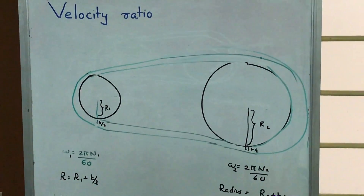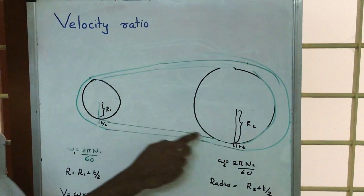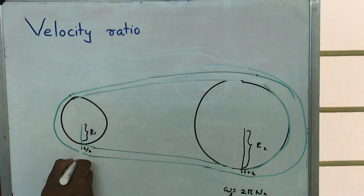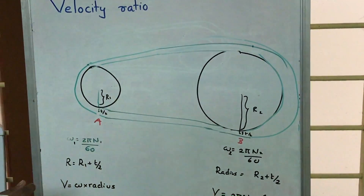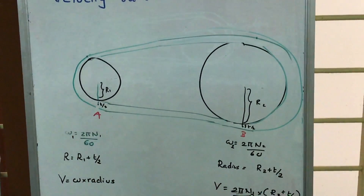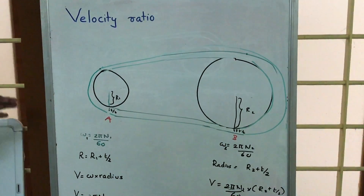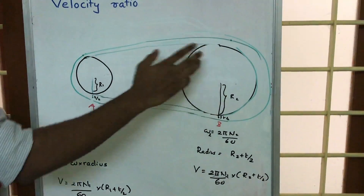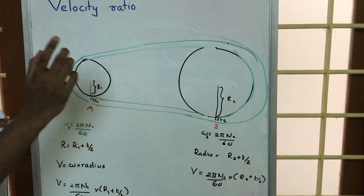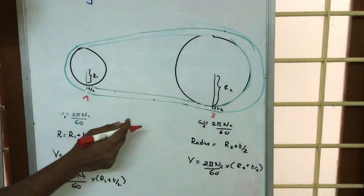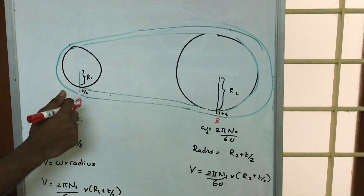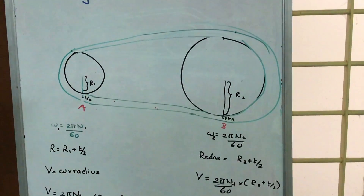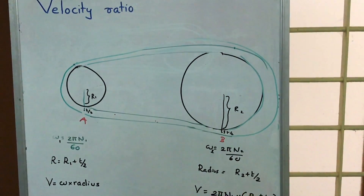Now, considering the belt, we take two points A and B on it. If we consider this belt as non-elastic, there will be no deformations. With no deformations and both pulleys rotating, the velocity at any point in the belt will be the same. Since points A and B are both on the belt, the velocity at A and at B will be equal.